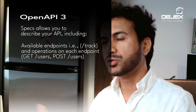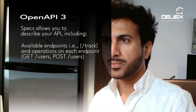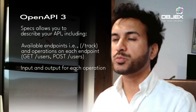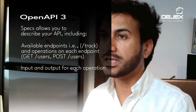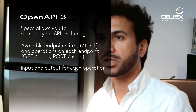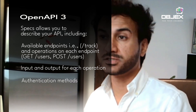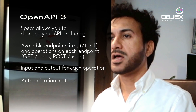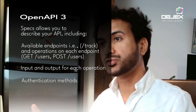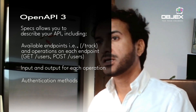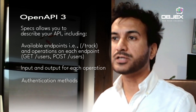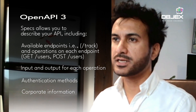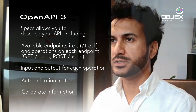For example, GET and POST. Operation parameters, input and output for each operation, can be described in Open API specifications as well. Authentication methods — how to authenticate and use your APIs — can also be defined. You can also add your corporate information, terms of use, and all that kind of meta information.